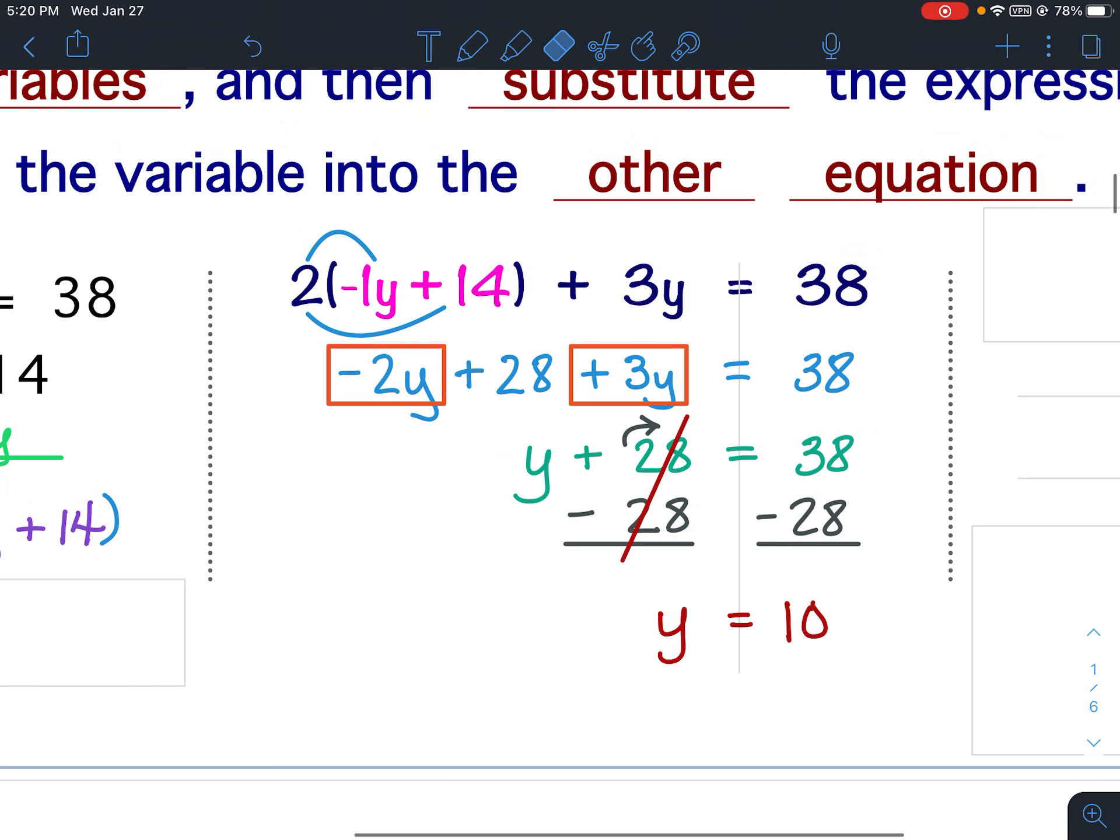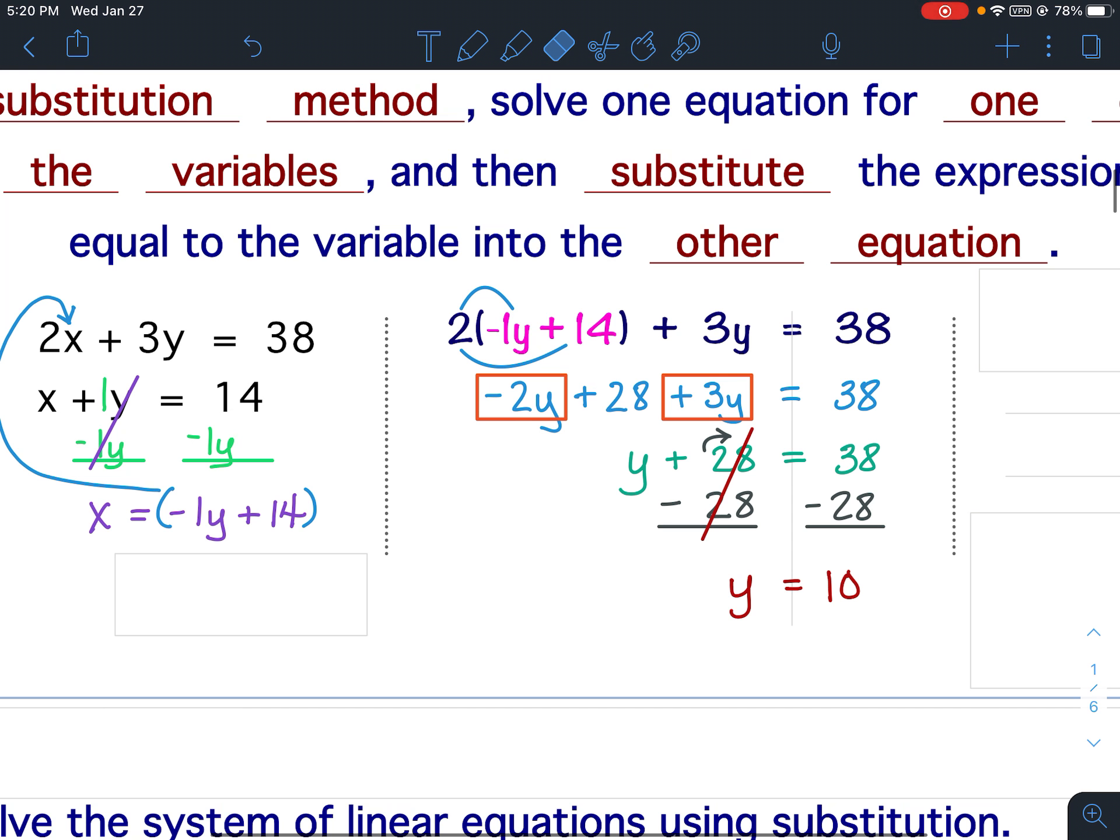Okay, now we're only halfway done. If you remember, when we did solving systems of equations using graphing, if the lines intersected, you had an ordered pair. Well, ordered pairs are both x and y coordinates. So I found the y, but I need to find the value of x. So what you're going to do is you're going to go back to this original equation that you solved for. Okay, and you're going to use that equation for the last step.